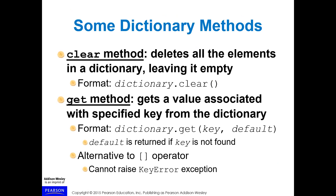Some useful dictionary methods: the clear() method deletes all elements in the dictionary, leaving it empty — the format is dictionary.clear(). The get() method retrieves a value associated with a specified key from the dictionary — format is dictionary.get(key). A default value is returned if the key is not found.